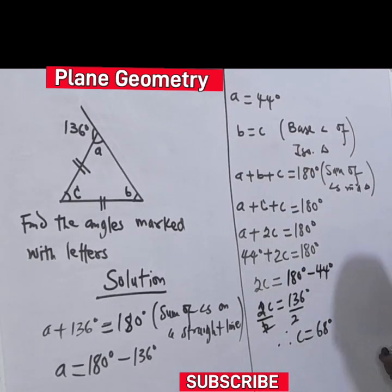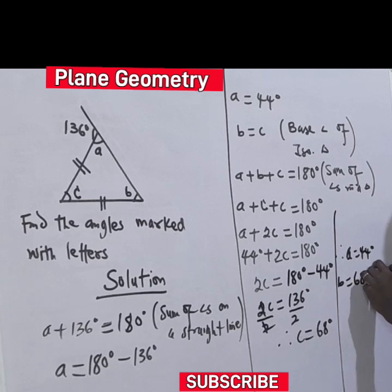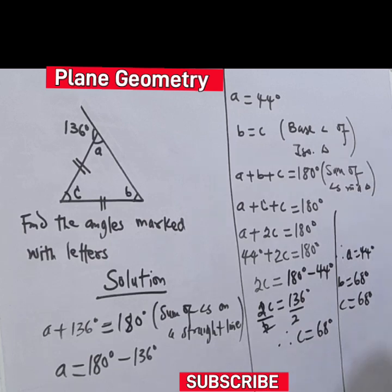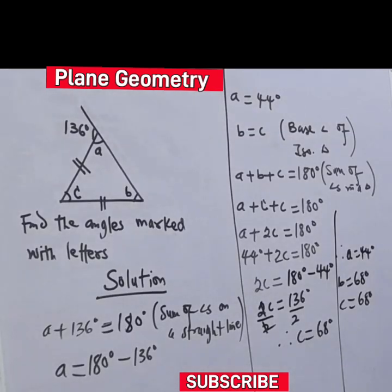I can say that B is also 68 degrees. Now therefore A is 44 degrees, B is equal to 68 degrees, C is equal to 68 degrees. If you add this up it will give us 180. Find it interesting, like and subscribe to our YouTube channel. Amen.